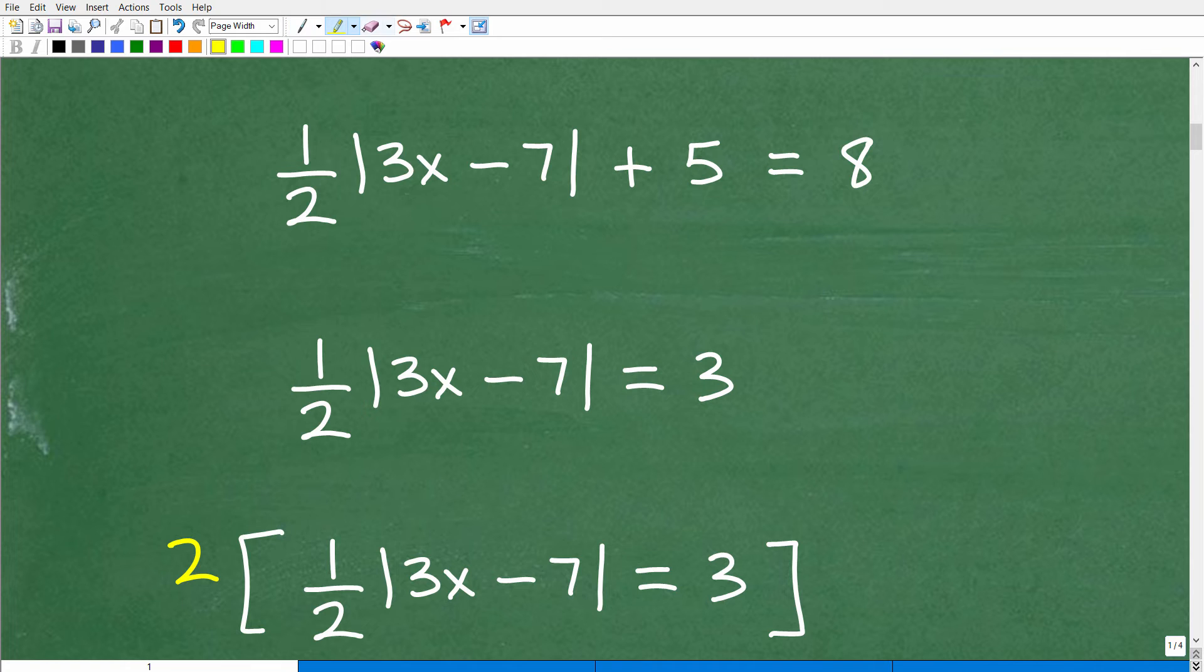Okay, so, again, first step is I'm going to go ahead and isolate this absolute value part on one side of the equation. That would be the left-hand side of the equation. So the first thing I'm going to do is I'm going to go ahead and subtract 5 from both sides of the equation.